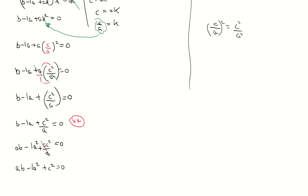We're practically on the home stretch. The question wants c squared isolated on the left, so move everything else to the right-hand side. That gives c squared equals a squared minus ab. There's a common factor of a, so factorizing out gives c squared equals a times (a minus b), which is exactly what they wanted. The advice here is to always keep track of the form the question wants, and then do the algebraic manipulation to get there.